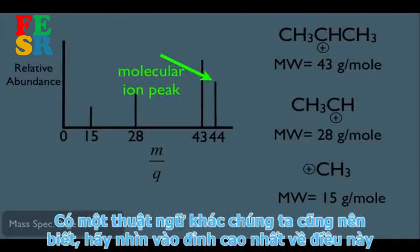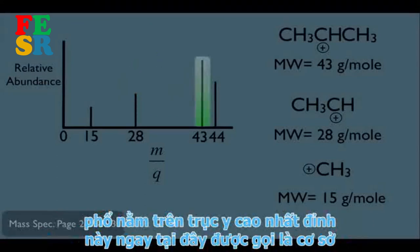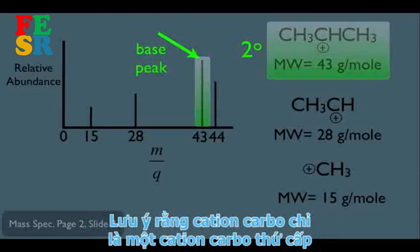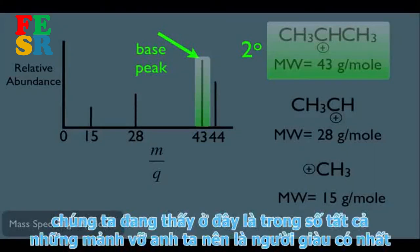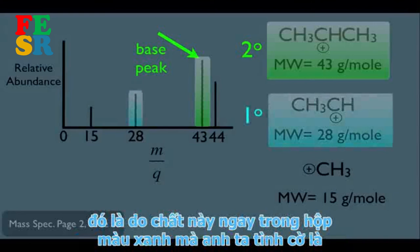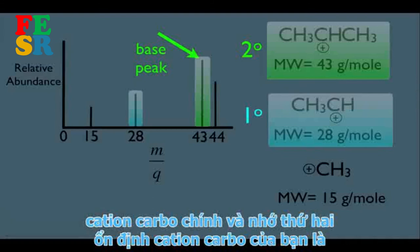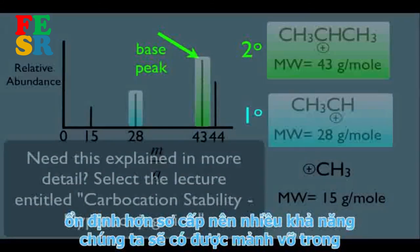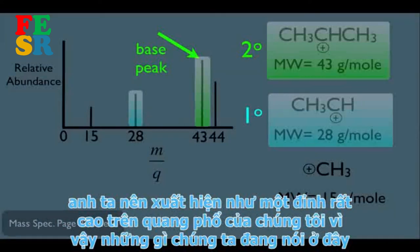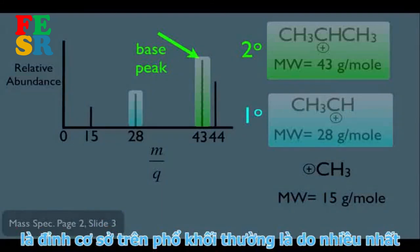There's another important term: the base peak — the tallest peak on the spectrum (highest on the y-axis). The base peak here is due to the secondary carbocation fragment. Out of all fragments, the secondary carbocation is most abundant because secondary carbocations are more stable than primary carbocations, so it forms more readily and appears as the tallest peak.